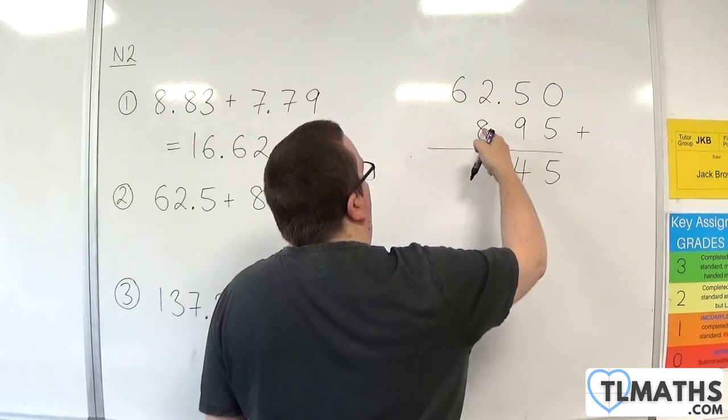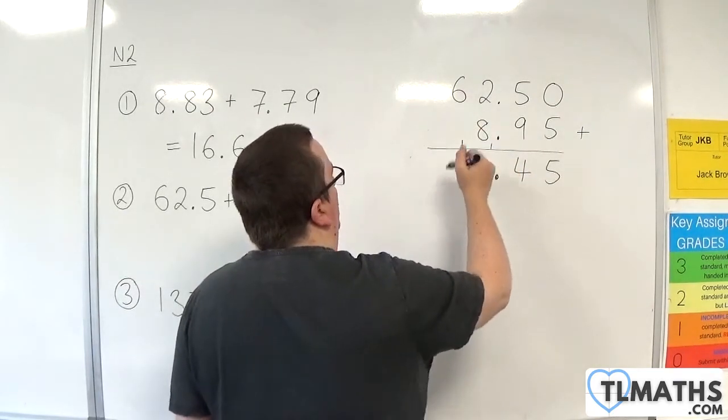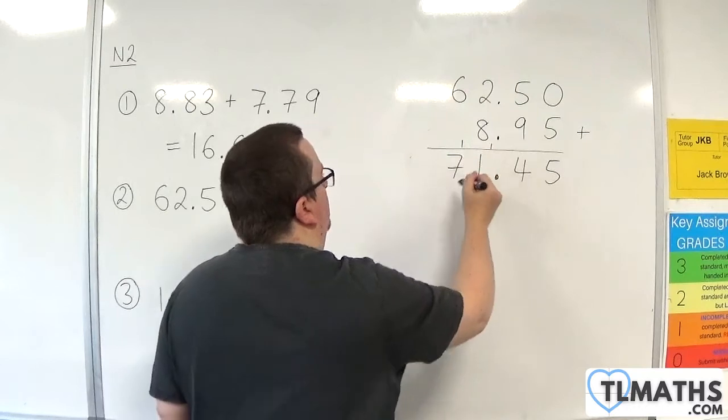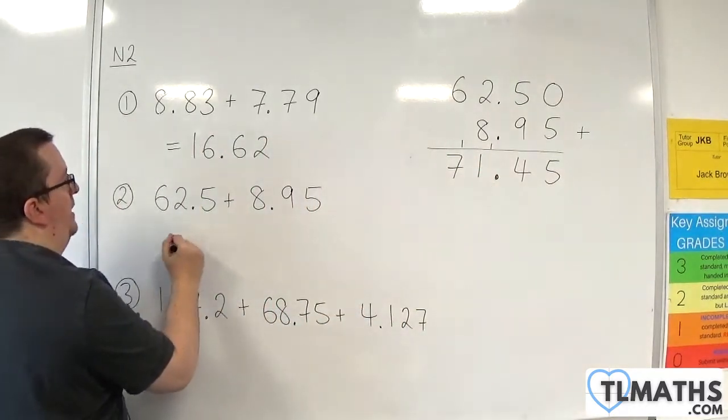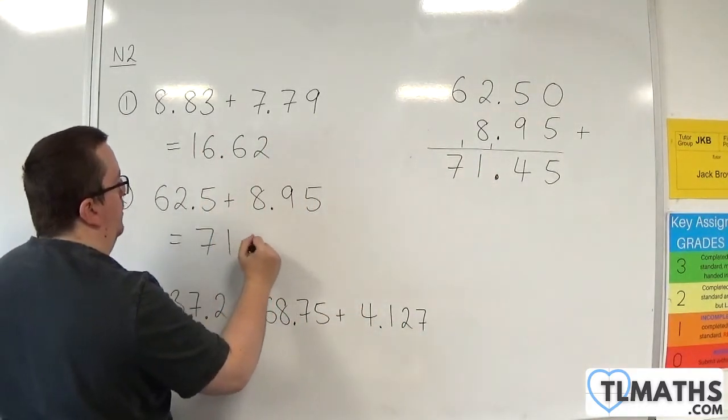2 plus 8 is 10, plus the 1 is 11. So, 1, and then carry the 1. 6 plus 1 is 7. We have 71.45.